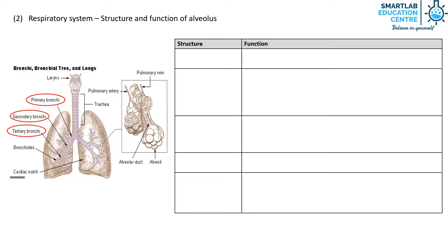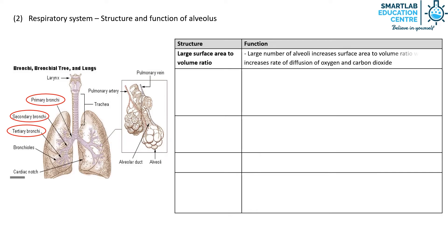Firstly, the alveolus has a large surface area to volume ratio. The large number of alveoli increases the surface area to volume ratio, thereby increasing the rate of diffusion of gases.